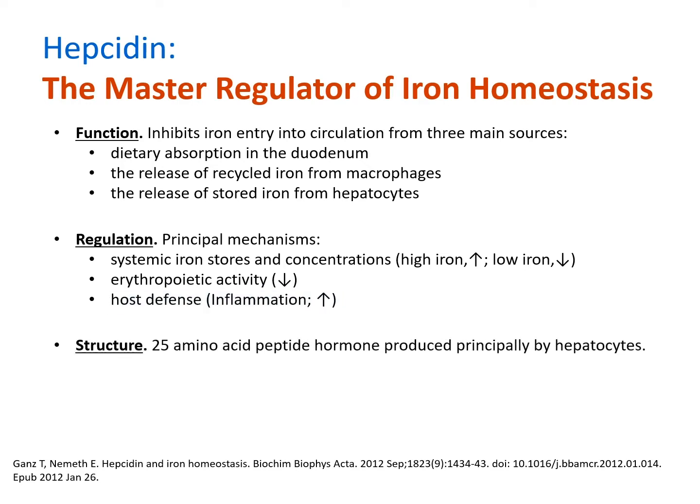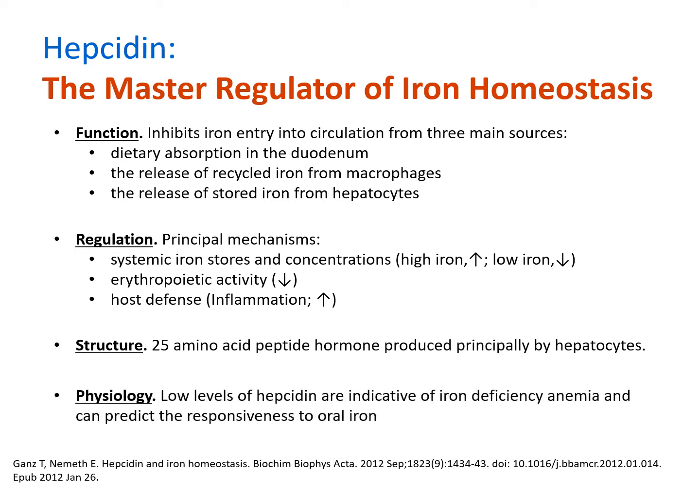Structurally, hepcidin is a small cationic peptide of the defensin family, compacted by four disulfide bridges. It is principally expressed in the liver, but localized production does occur in other tissues like the heart and brain. Physiologically, hepcidin can predict iron deficiency anemia, as well as non-anemic iron deficiency.